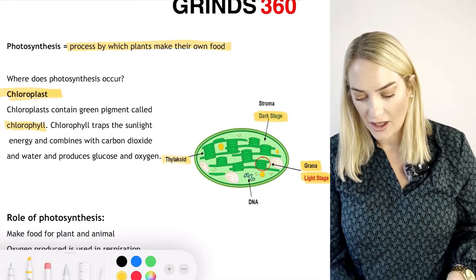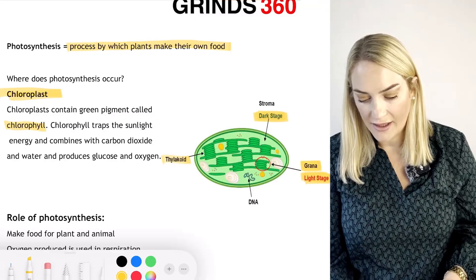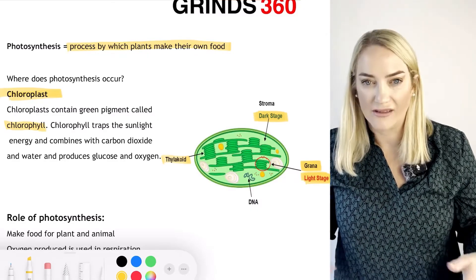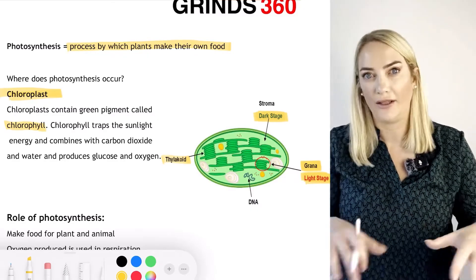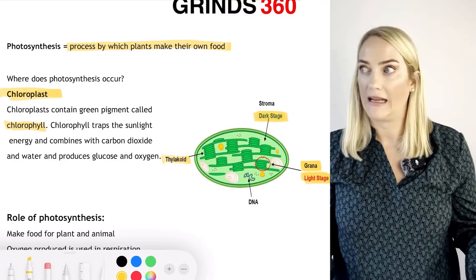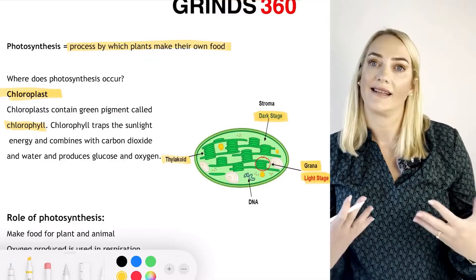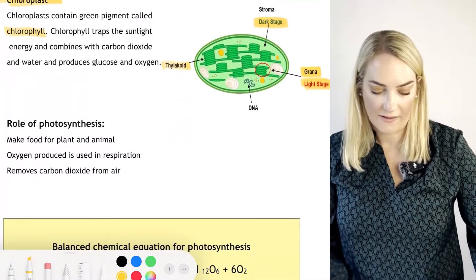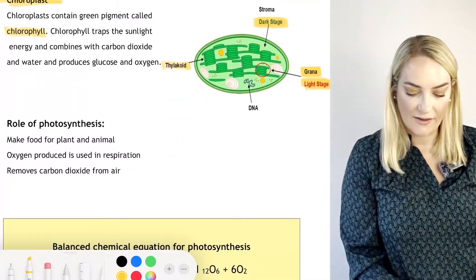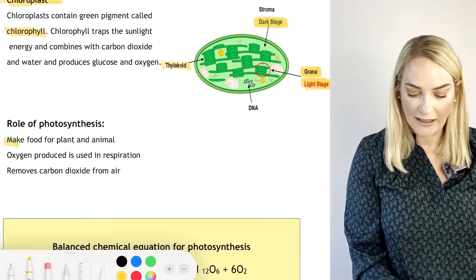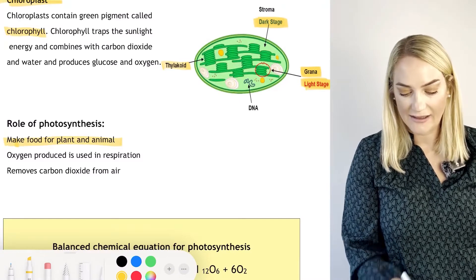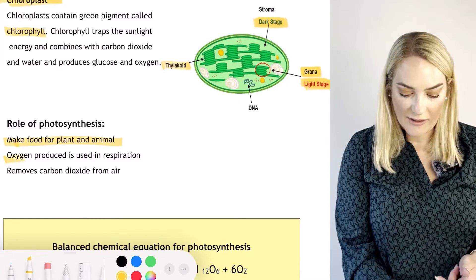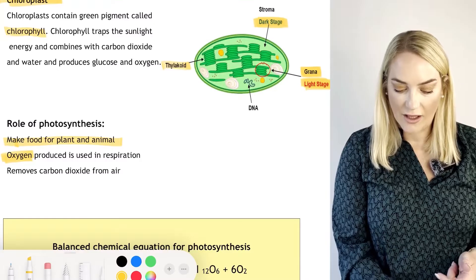The second stage is the dark stage, which takes place in the stroma. The stroma is like the fluid surrounding the structures — like the cytoplasm of a cell. The role of photosynthesis is to make food for plants and animals.